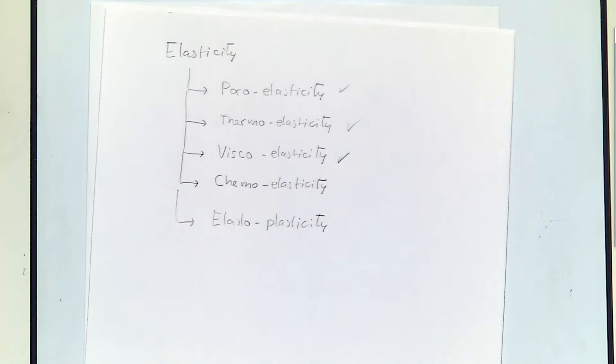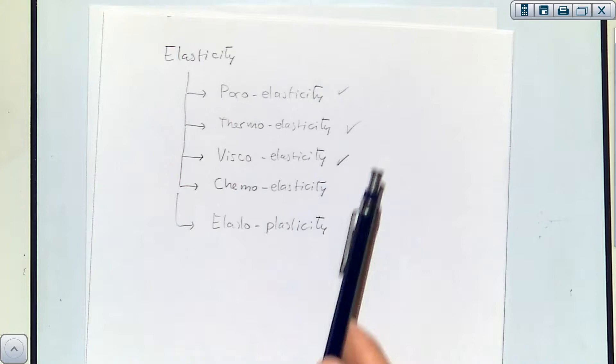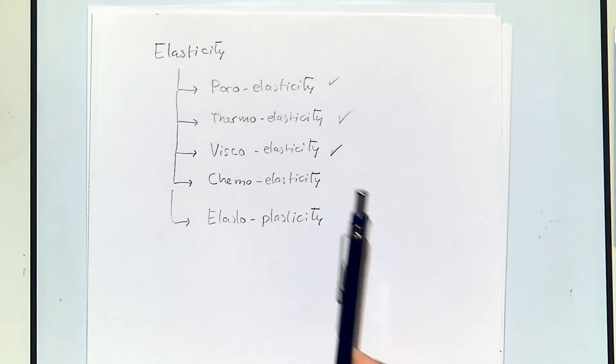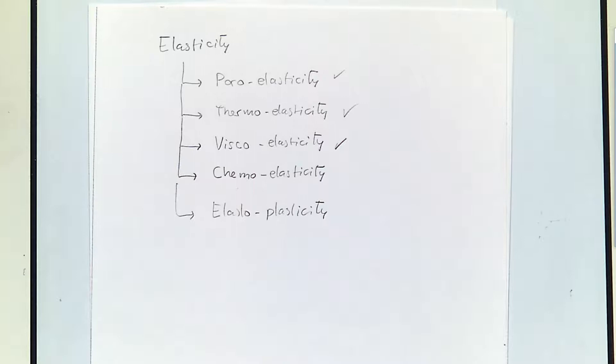We saw viscoelasticity, but there are many other things we need to check off the list in order to consider real deformation behavior of rocks. Poroelasticity — done. Thermoelasticity — done. Viscoelasticity too. We didn't see much of the equations because there are several models that would require a lot of time, but all of them show more or less the same behavior: those three manifestations of viscoelasticity. And now we'll talk about chemoelasticity.